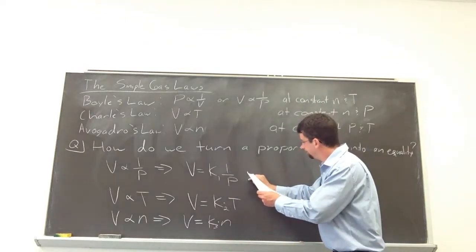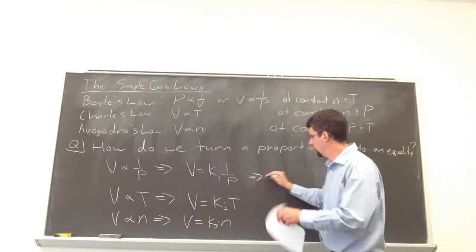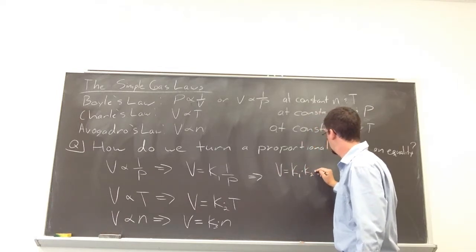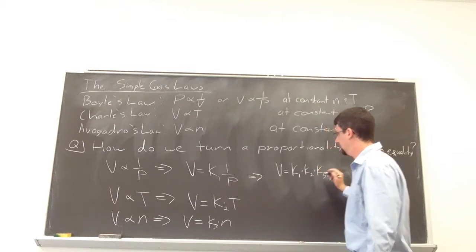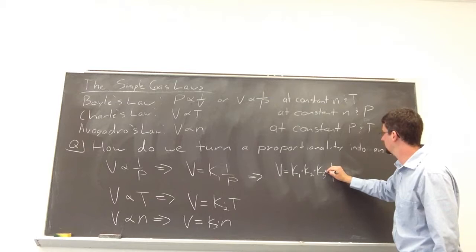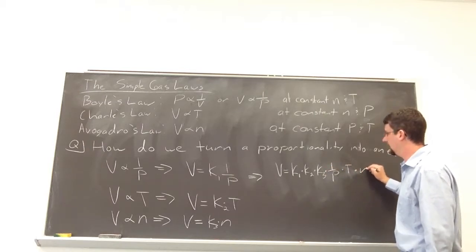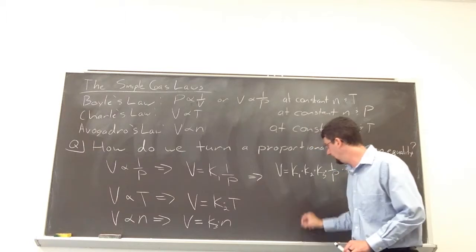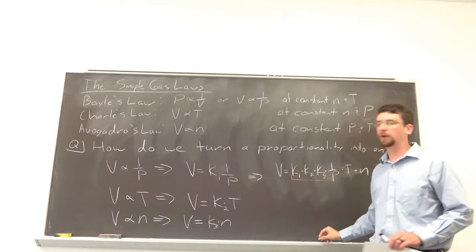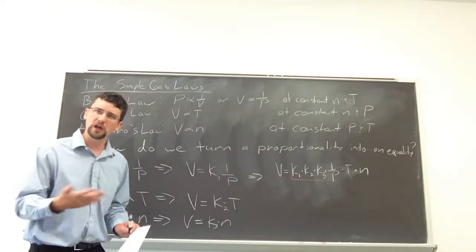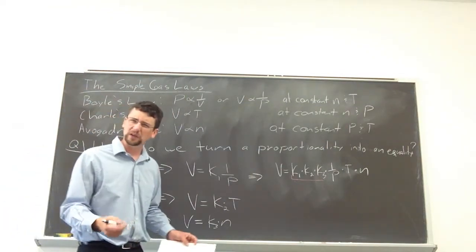So, in that case, what we should find is, volume is equal to K1 times K2 times K3, 1 over P times T times N, right? Well, we have a collection, an ensemble of constants right along here. All we have to do is just combine those things together. And we can call it a new constant. In this case, we're going to call it R.